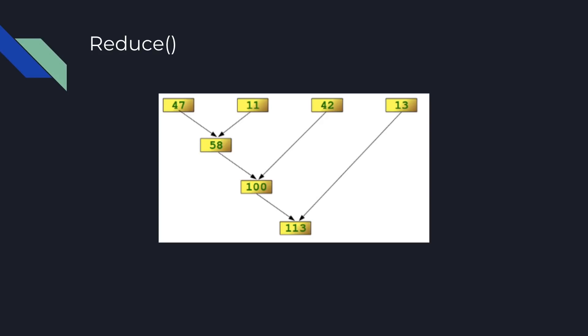On the first call, the first argument is the first element of the array, and the second argument of the reduce callback is the second element of the original array.